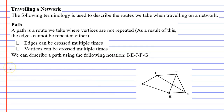This one's called a path, and a path is basically a route we take where vertices are not repeated. Now if you don't repeat vertices you'll find that you also won't repeat edges. We'll put an X stating that vertices cannot be crossed multiple times, and another X because as a result edges cannot be crossed multiple times either.